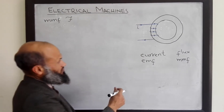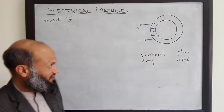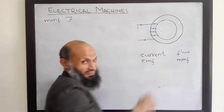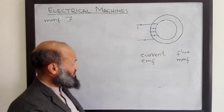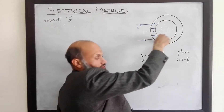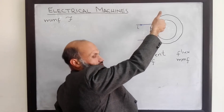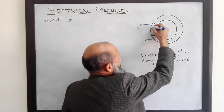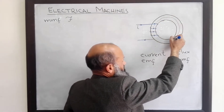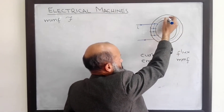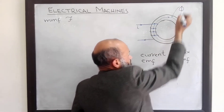Consider this simple magnetic circuit. We have a steel ring on which we have wound a current carrying conductor. Due to that, the flux will flow in this magnetic circuit. The direction of flux lines can be determined by the right-hand rule. Flux is denoted by the symbol phi.